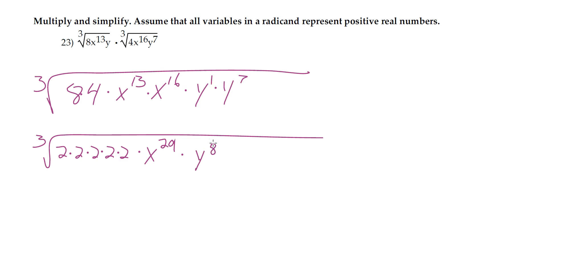Okay, now 3 goes into 29, 9 times with remainder 2. And 3 goes into 8, 2 times with remainder 2. We can use this information to know how many x's and y's come out.